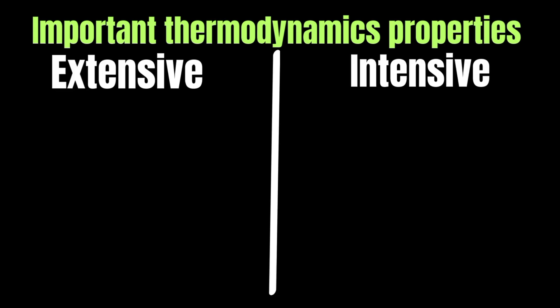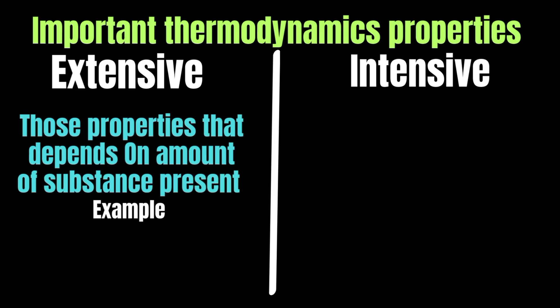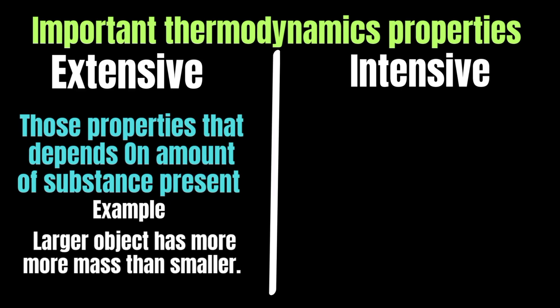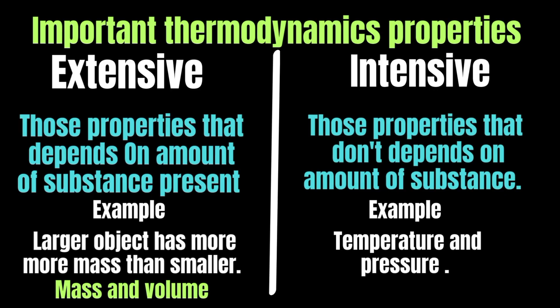Let's talk about two important types of properties: extensive and intensive. Thermodynamic properties are divided into two types based on whether they depend on the amount of matter present. Extensive properties depend on the amount of substance — for example, mass and volume. Intensive properties do not depend on the amount of substance. For example, temperature and pressure are intensive properties because a cup of boiling water and a pot of boiling water have the same temperature.